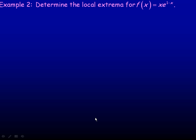On the second page we have an example where we are asked to find the local extrema for the function f(x) = xe^(1-x). The way we find local extrema is by setting the first derivative to 0, so we need to differentiate xe^(1-x).